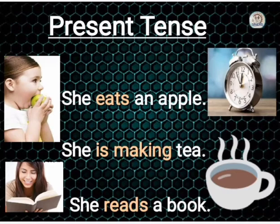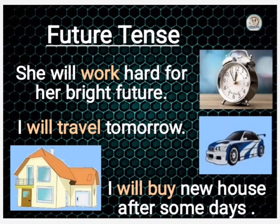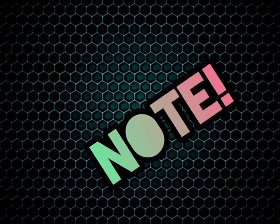Future tense مطلب مستقبل — آنے والا زمانہ۔ جیسا کہ: 'میں بہت اچھا پڑھوں گا، میں پارلیمنٹ میں officer بنوں گا، میں غریبوں کی مدد کروں گا۔' یہ مستقبل کے sentences ہیں۔ Example: 'She will work hard for her bright future, I will travel tomorrow, I will buy a new house after some days۔' یہاں آنے والے زمانے کی بات کی گئی ہے، اس لیے future tense ہے۔